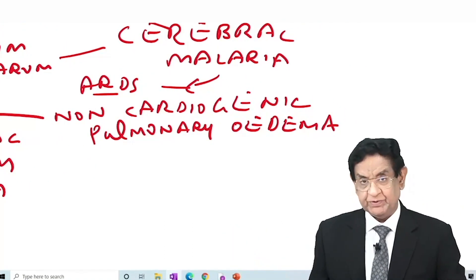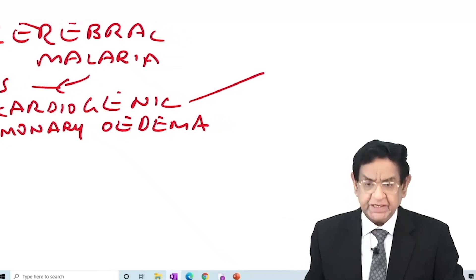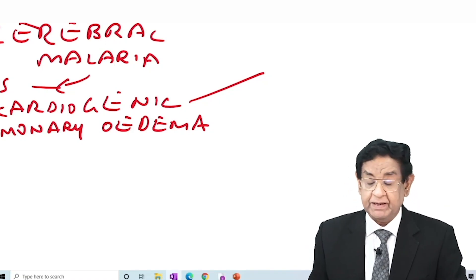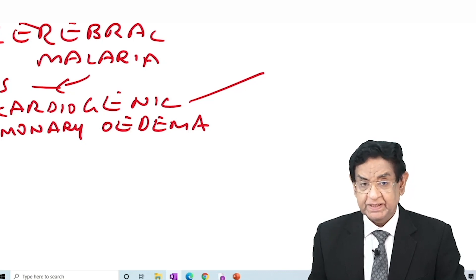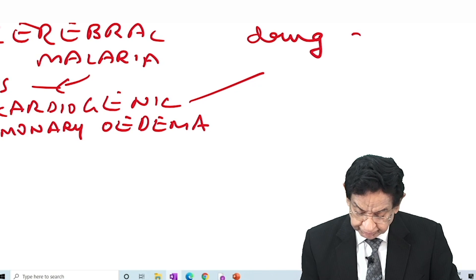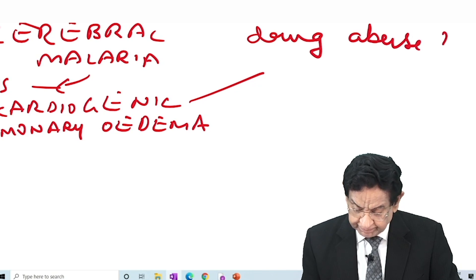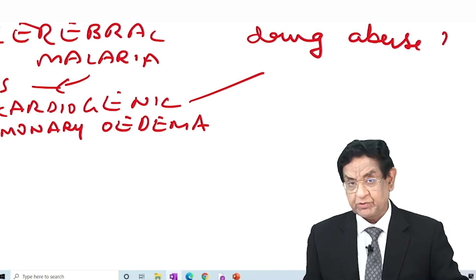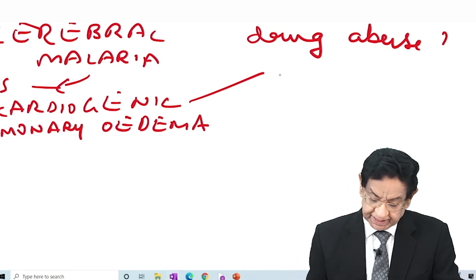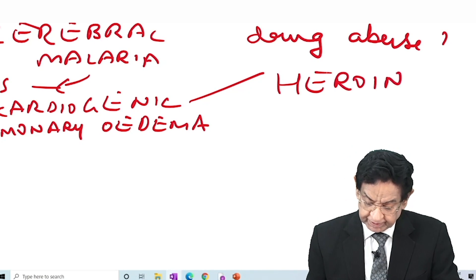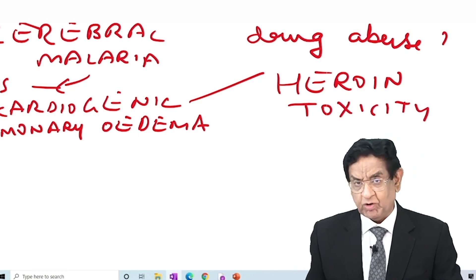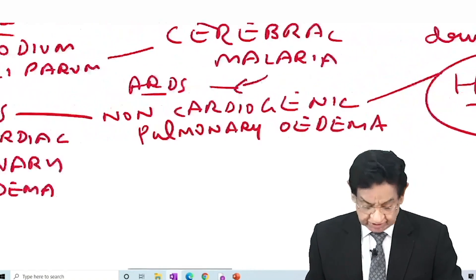I have a lovely question for you. Sepsis is a cause of ARDS, and it can also occur in Plasmodium falciparum. Now, tell me: which type of drug abuse can lead to ARDS? The answer is heroin. Heroin toxicity is a well-known cause and a very frequently asked question in all exams. Cannot afford to forget heroin toxicity.